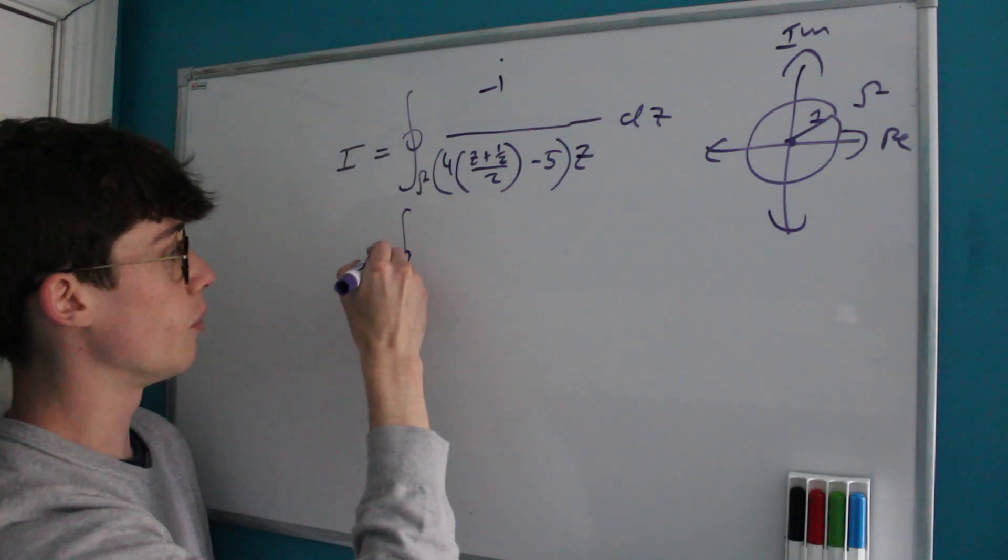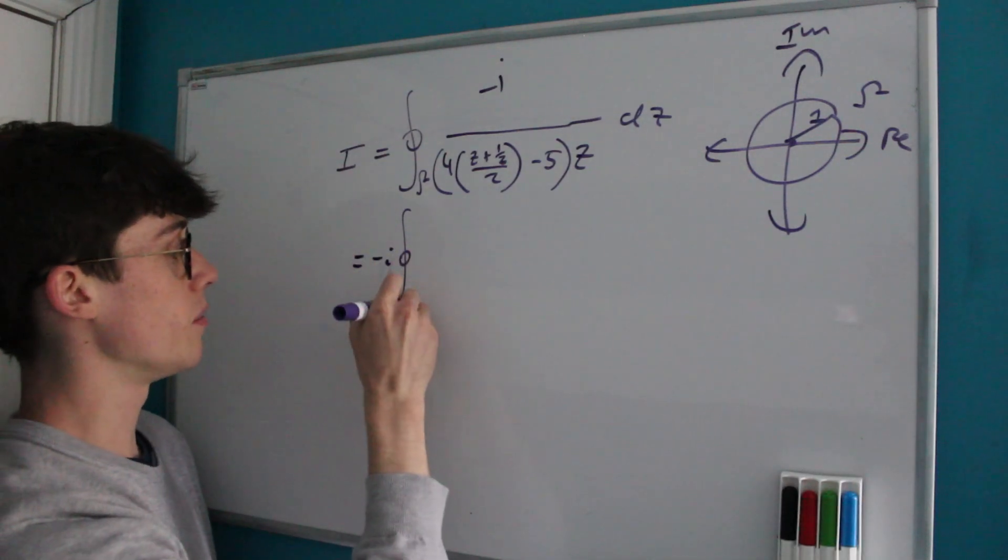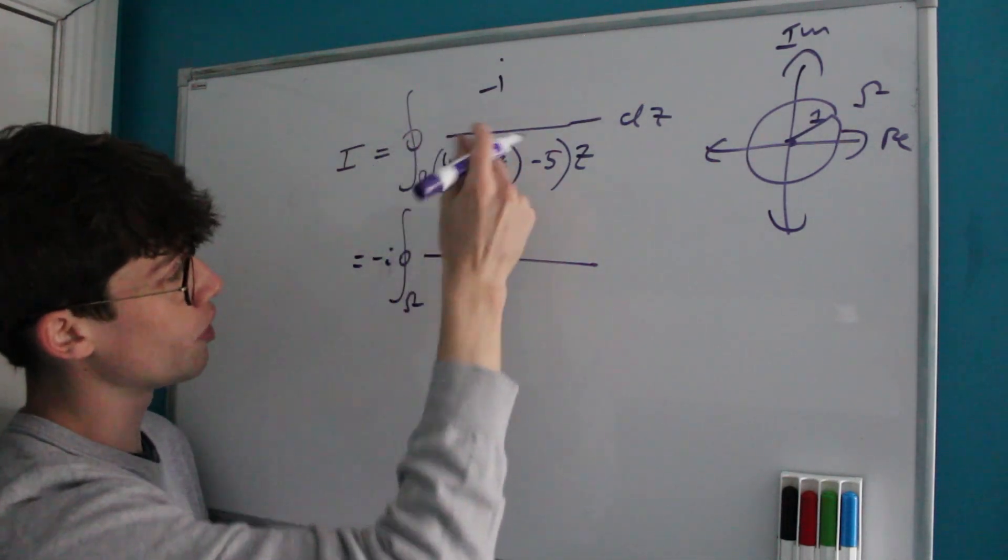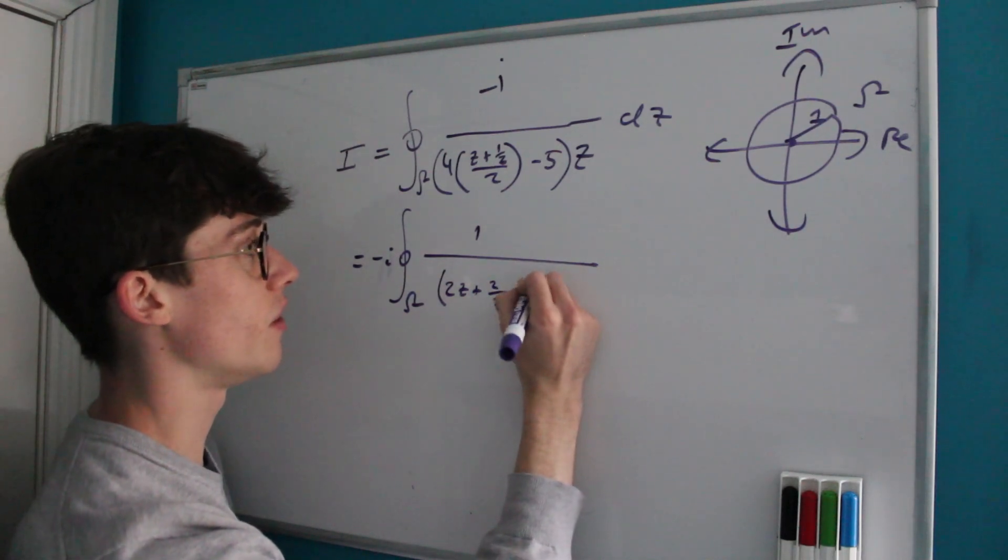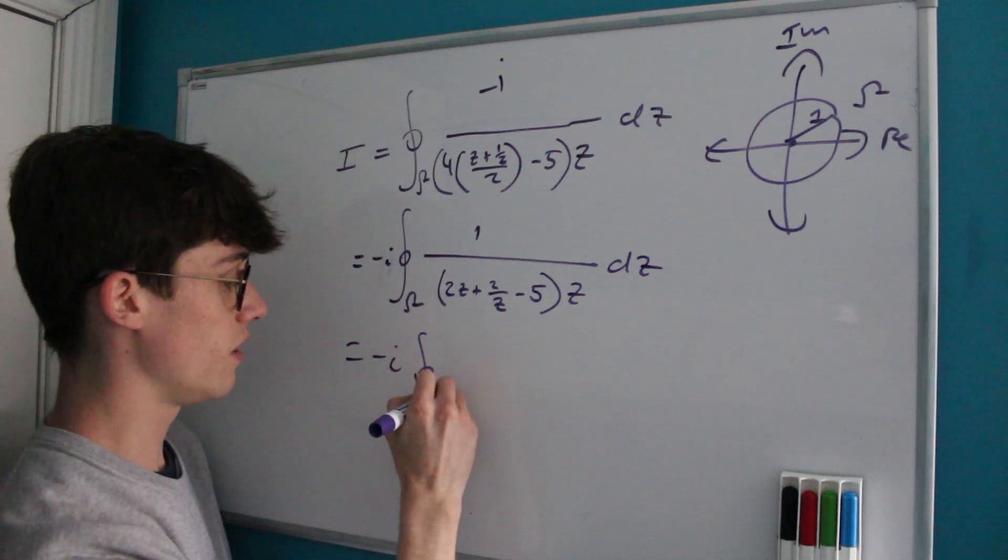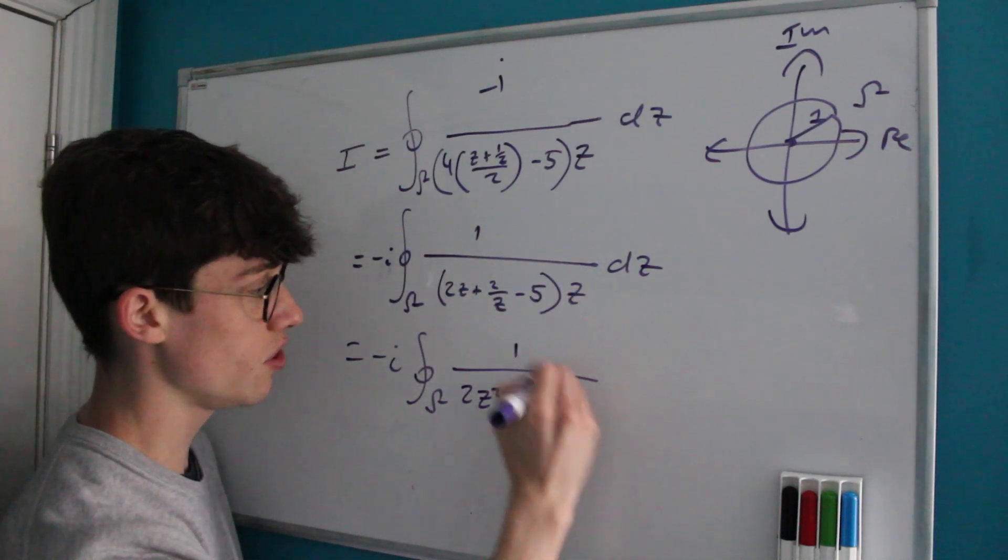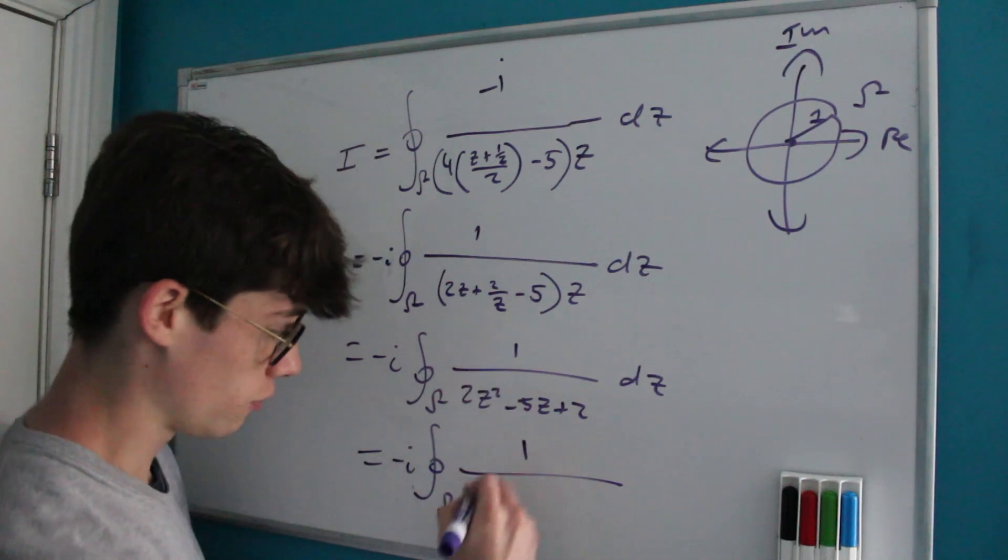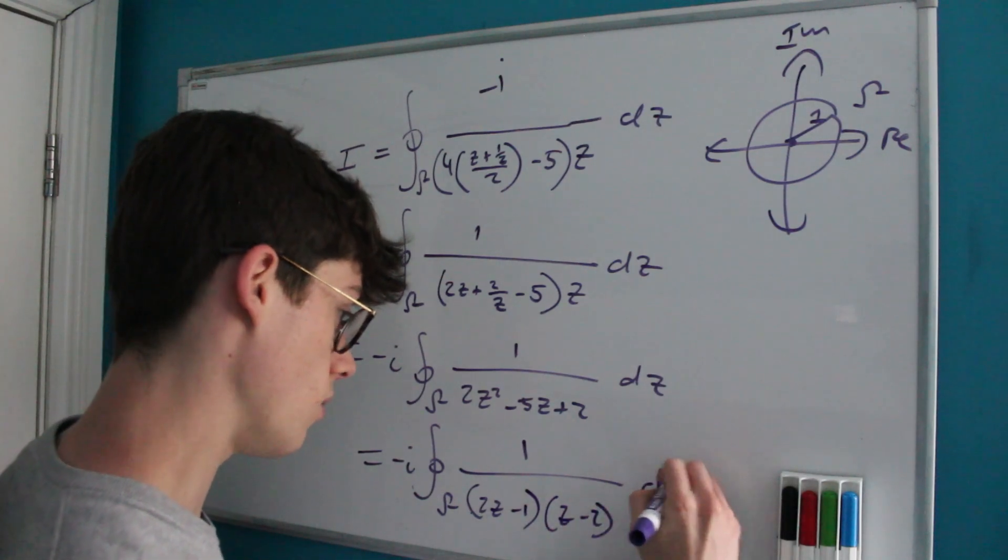And let's just tidy this up a little bit. So this is equal to, well, we can pull our negative i out of the integral. So it's going to be negative i times that same contour times 1 divided by, now let's expand this back out. We've got 4 times a half here, which is really going to leave us doubling. So it's 2z plus 2 over z minus 5, all times by z dz. And that's actually great that we've got that z on the outside there, because it's going to leave us with a quadratic. It's going to leave us with 2z squared minus 5z plus 2 dz.